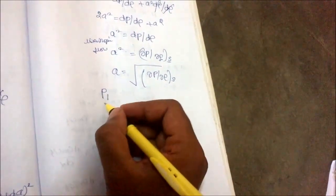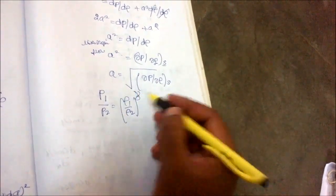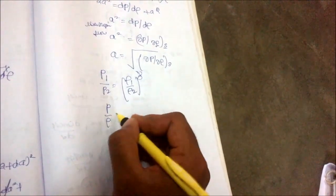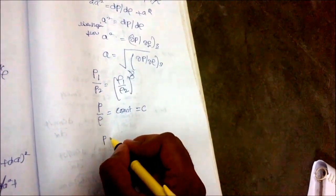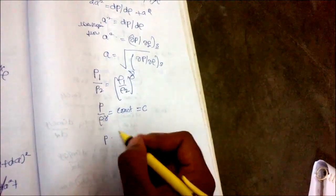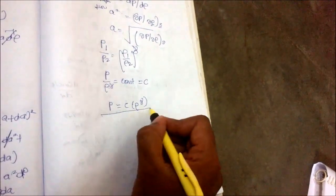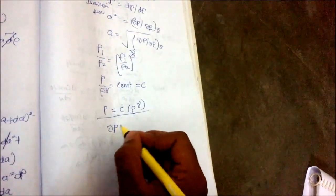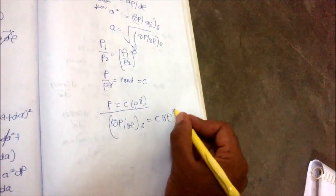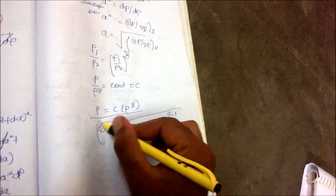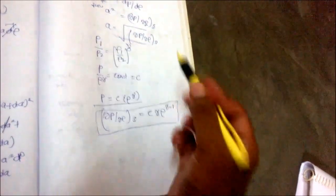One of the isentropic relations is P₁/P₂ = (ρ₁/ρ₂)^γ, which can be written as P/ρ^γ = constant = C, so P = C·ρ^γ. Differentiating with respect to density: ∂P/∂ρ at constant S = C·γ·ρ^(γ−1). Substituting this into the speed of sound equation: A = √(∂P/∂ρ)_S = √(C·γ·ρ^(γ−1)).